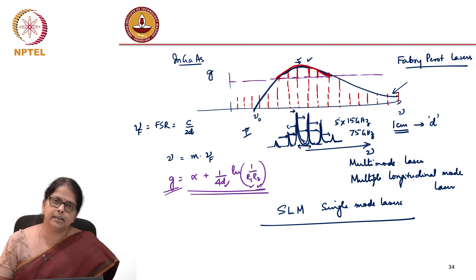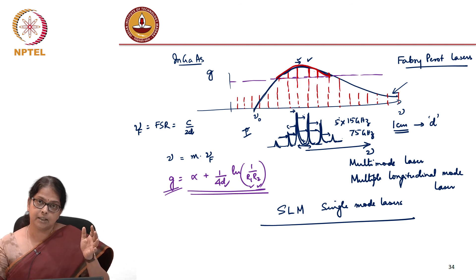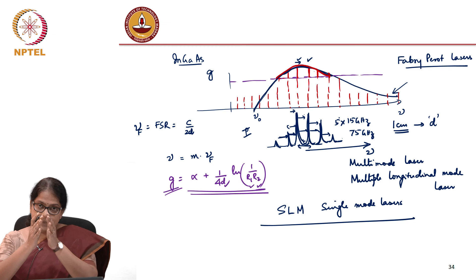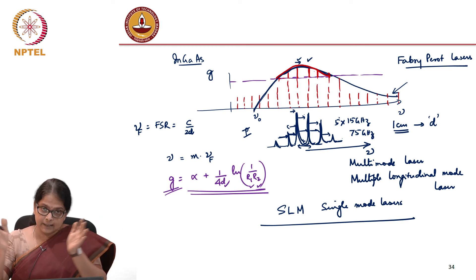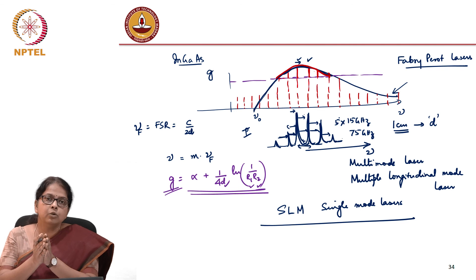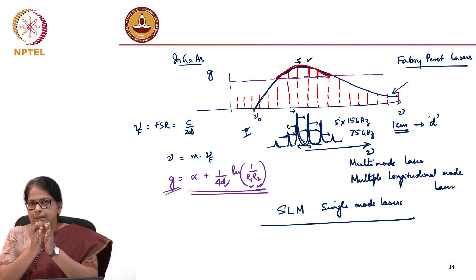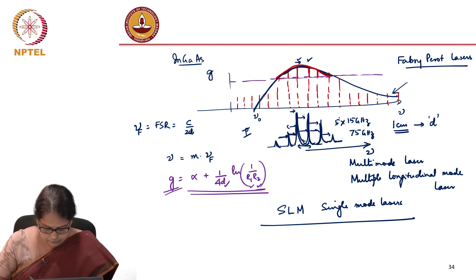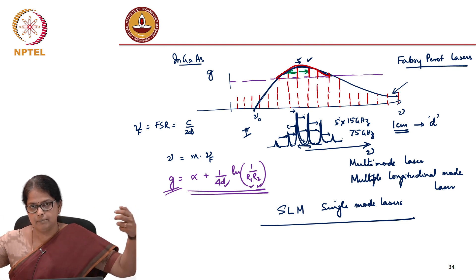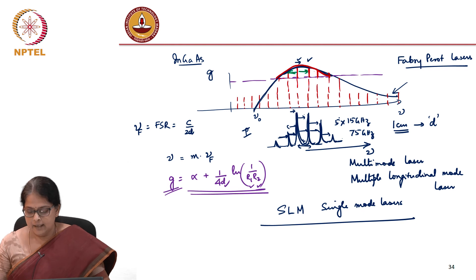You can say that I can change the spacing between the mirrors. As I increase the spacing between the mirrors, the FSR reduces. So that is not what I should do. I should decrease the spacing between the mirrors. So my FSR increases and I kind of move these modes away from each other by decreasing the spacing, increasing the FSR.